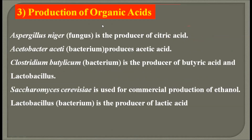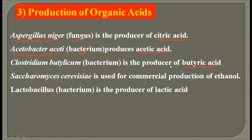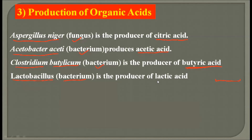Third application is organic acids produced by microbes. The first organic acid is citric acid, produced by Aspergillus niger, which is a fungus. The second acid is acetic acid, produced by Acetobacter aceti, which is a bacterium. The third acid is butyric acid, produced by Clostridium butylicum, also a bacterium. The fourth acid is lactic acid, produced by Lactobacillus, again a bacterium.